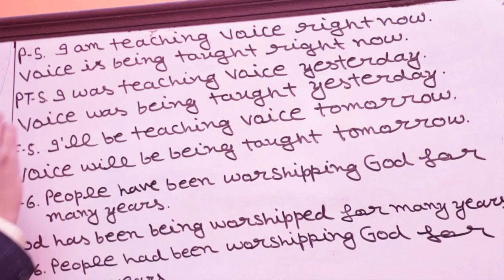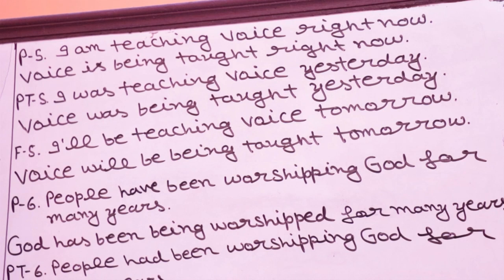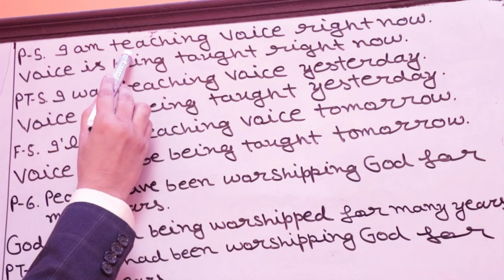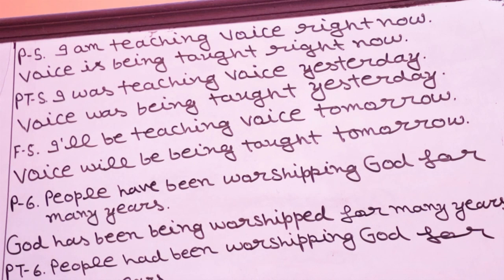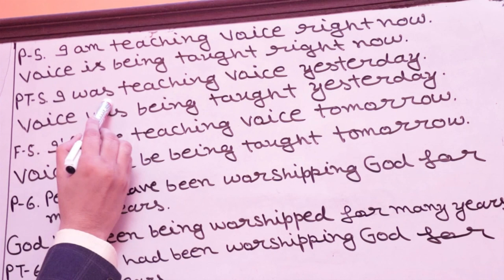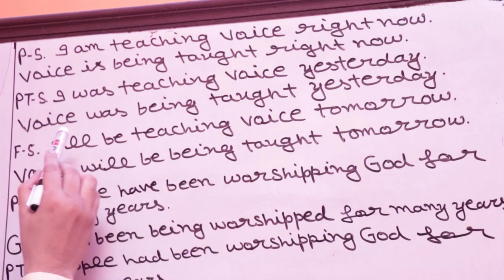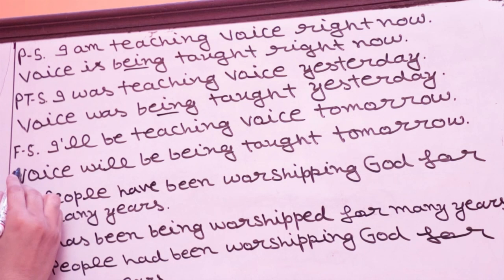P5 — present continuous: 'I am teaching you' → 'You are being taught.' 'I am teaching voice right now' → 'Voice is being taught right now.' PT5 — past continuous: 'I was teaching voice yesterday' → 'Voice was being taught yesterday.' Here 'was' is used and 'being' is added with the third form.